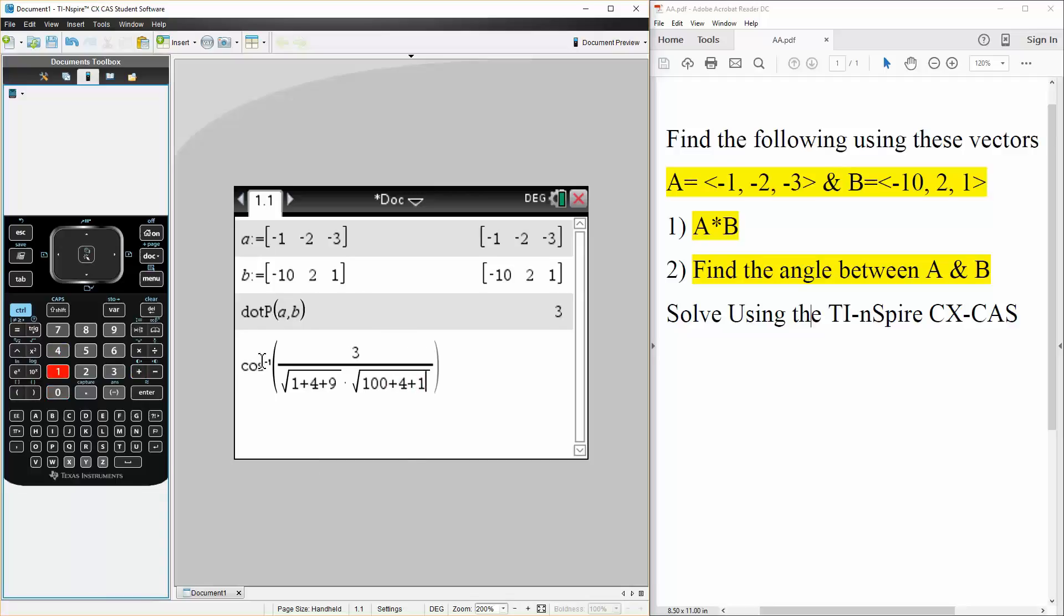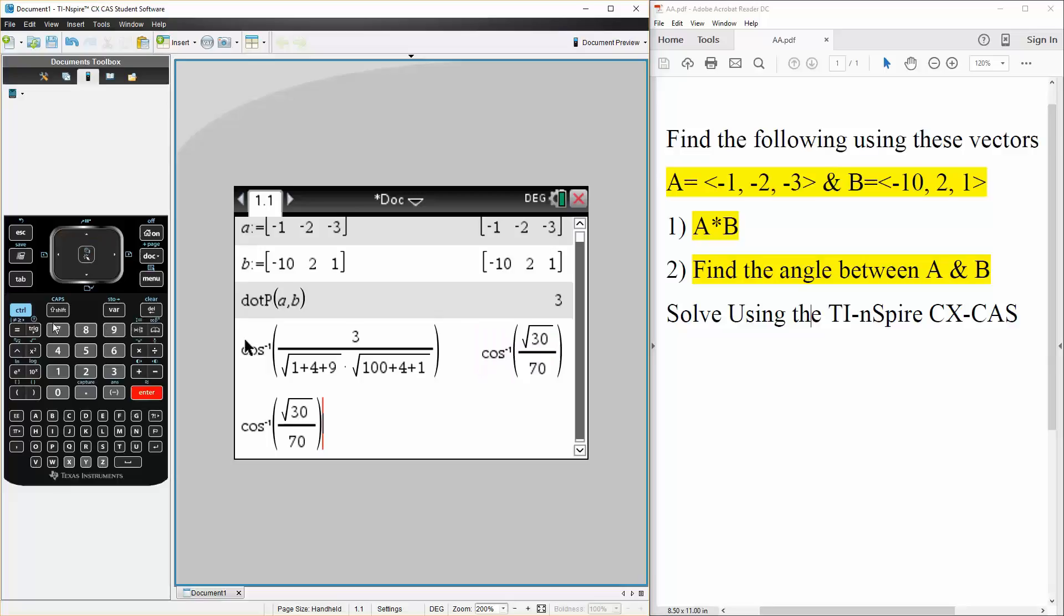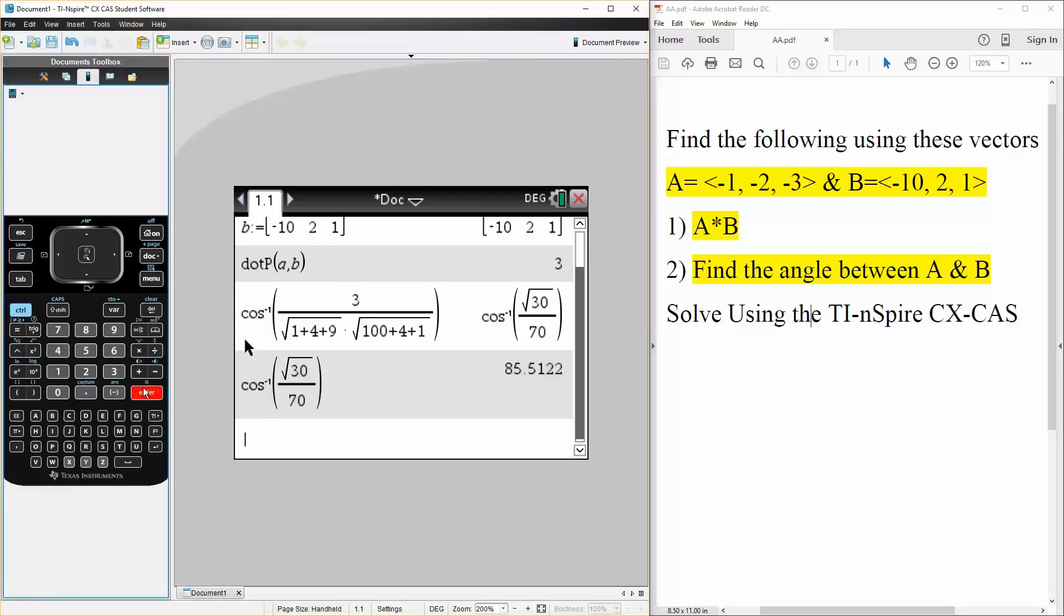We're doing cosine inverse, and our calculator is set to degrees, so our answer will also be in degrees. So we can do an approximation, control enter, and the angle is approximately 85.5 degrees, and that's all we need to do.